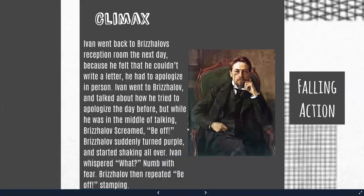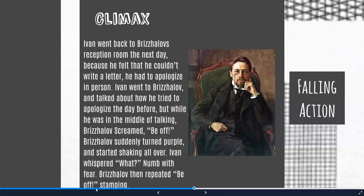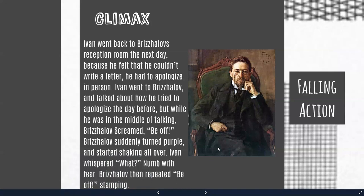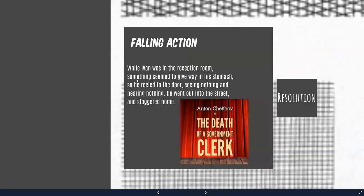Now we move to the climax — the most important event in the story, what we call the turning point. Ivan went back to Brizalov's reception room the next day because he felt he couldn't write a letter; he had to apologize in person. Ivan went to Brizalov and talked about how he had tried to apologize the day before. But while he was in the middle of talking, Brizalov screamed, 'Be off!' Brizalov suddenly turned purple and started shaking all over — he scared Ivan. Ivan whispered, 'What?' — numb with fear. Brizalov repeated, 'Be off!' stamping. This is the climax of the story.